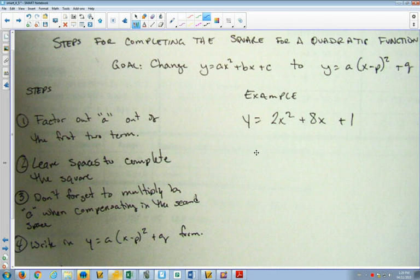Step number one now is the step that's different. In the past, you divided everything by the a value to complete the square. In this one, you factor out the a value.